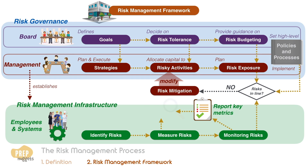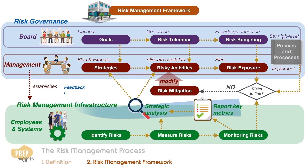Finally, strategic analysis is supported by the risk management reporting and other steps of the risk management process. The results of the analysis can help management improve its decision-making process and the allocation of capital and risk budget most fruitfully. Taken together, the reporting and strategic analysis are important feedback loops on the risk exposure and effectiveness of the strategies.